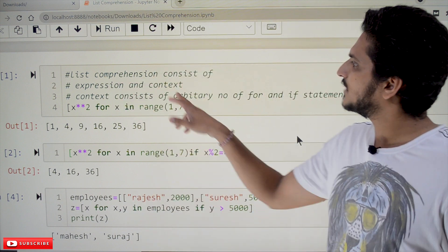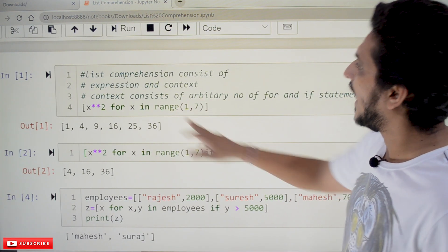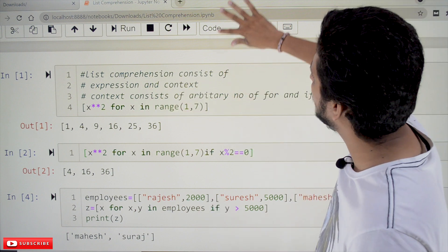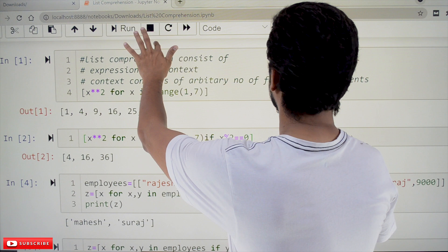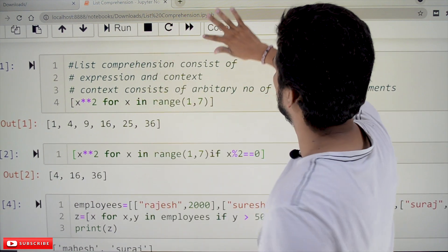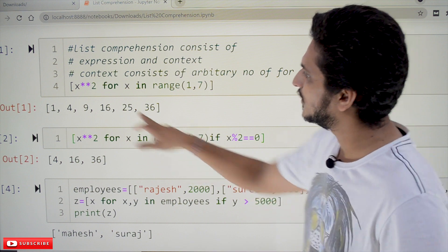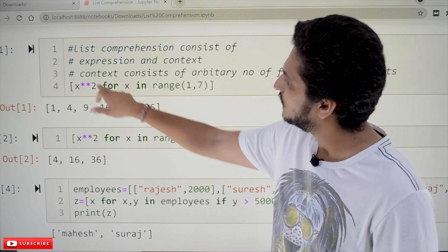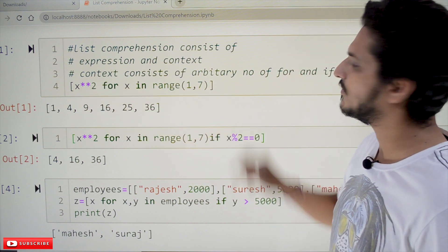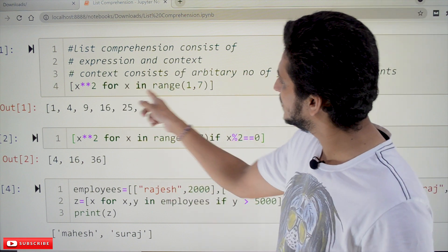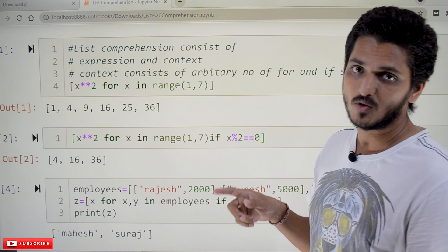So, list comprehension consists of expressions and context. In this, we are having expressions and context. Let's take this example: x**2 for x in range(1,7). If you write it in the list, it will take for x in range of 1 to 7 means it will take 1, 2, 3, 4,